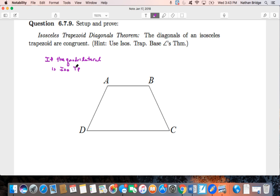That's the if-then, that's the if statement, that's the hypothesis. If the quadrilateral is an isosceles trapezoid, okay, then what? Then, I'll choose blue.